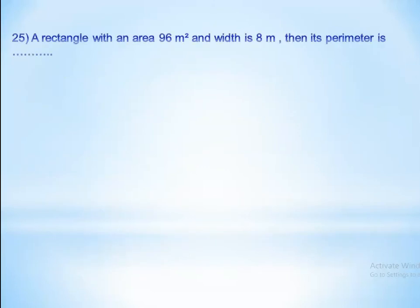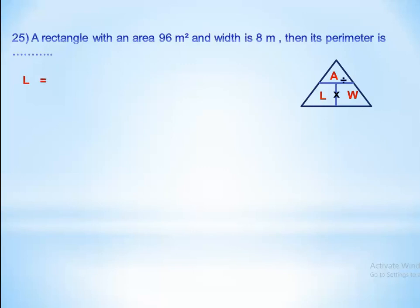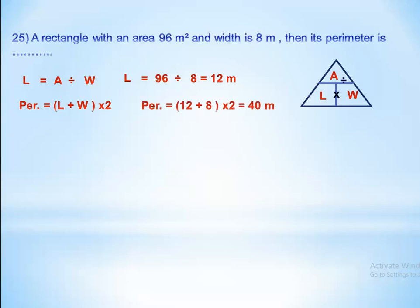A rectangle has an area of 96 square meters and a width of 8 meters. To find the length, we divide area by width: 96 divided by 8 equals 12 meters. Then the perimeter equals (length plus width) times 2, which is (12 plus 8) times 2 equals 40 meters.